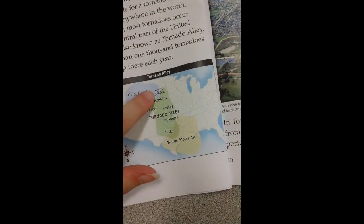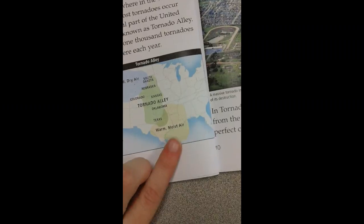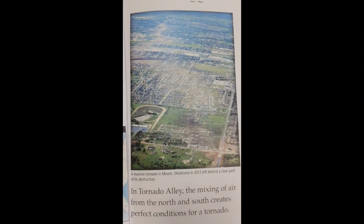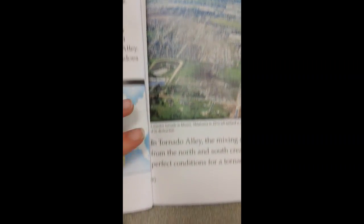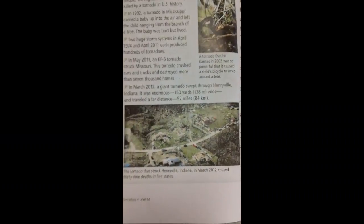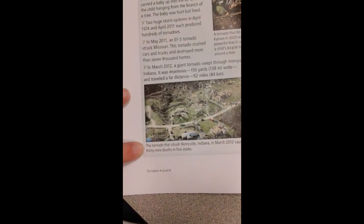In Tornado Alley — spanning South Dakota, Nebraska, Colorado, Kansas, Oklahoma, and Texas — cold dry air from the north meets warm moist air from the south, creating perfect conditions for tornadoes. A massive tornado in Moore, Oklahoma in 2013 left behind a clear path of destruction. The tornado that struck Henryville, Indiana in March 2012 caused 39 deaths across five states.